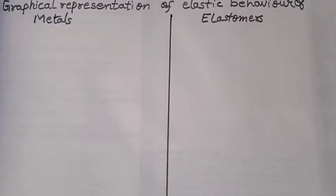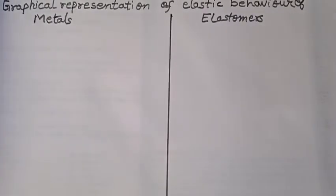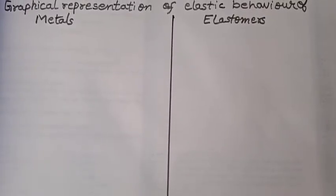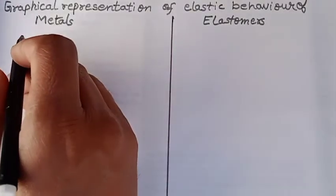In order to understand elastic behavior of different materials, we have a very good tool: graphical representation. First, I am drawing a graph. If we want to study elastic behavior, we have two different parameters: one is stress and the other is strain. So we are going to draw a graph between stress and strain.